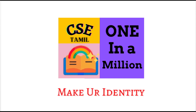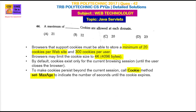Welcome friends, welcome to One in a Million YouTube channel. In this video, we have a question about Java servers in web technology. A maximum of how many cookies are allowed at each domain? The answer is 20.